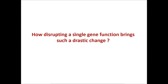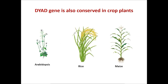However, the number of seeds produced from these mutant plants is very very low. So how disrupting a single gene function brings such a drastic change remains unclear. My PhD work aims to understand the mechanism of dyad. I have used bioinformatics, genetics and molecular biology tools and identified a domain in dyad, showing that this region is functionally conserved in crop plants like rice and maize.